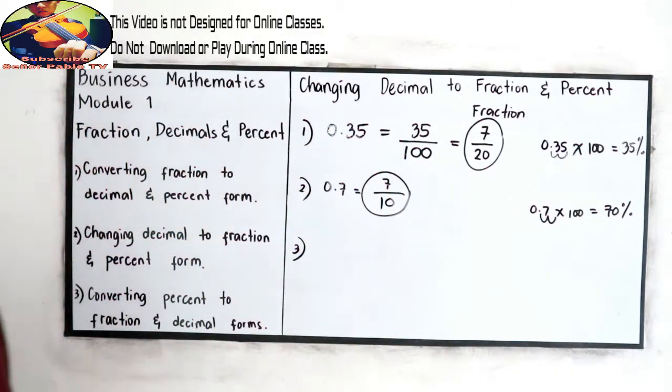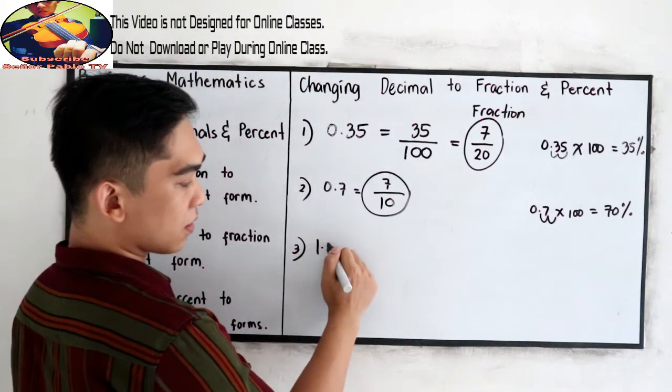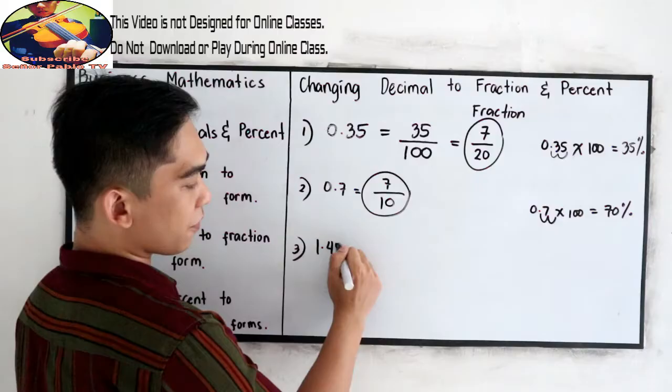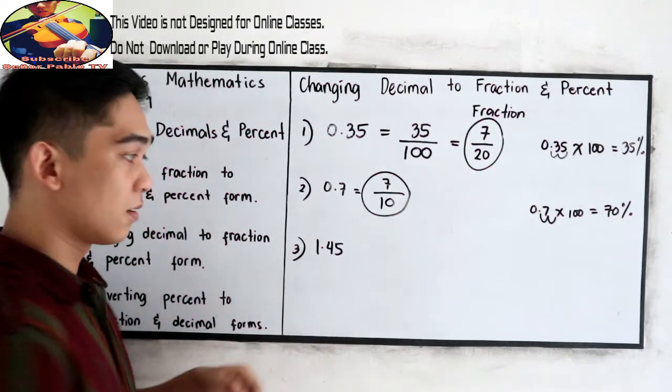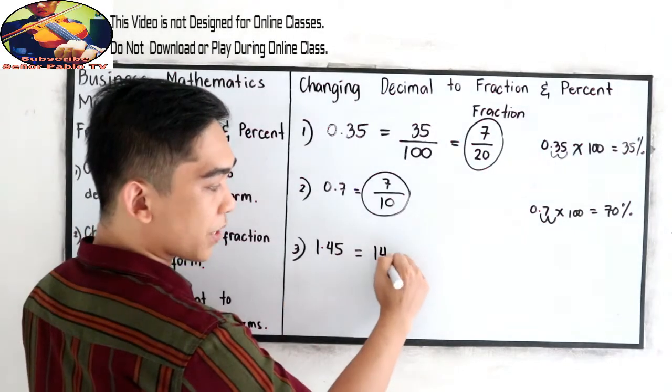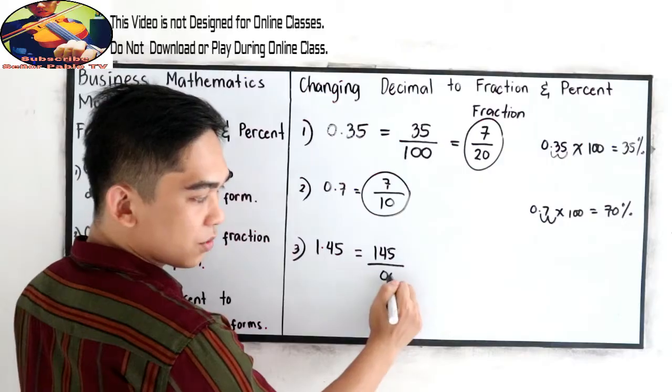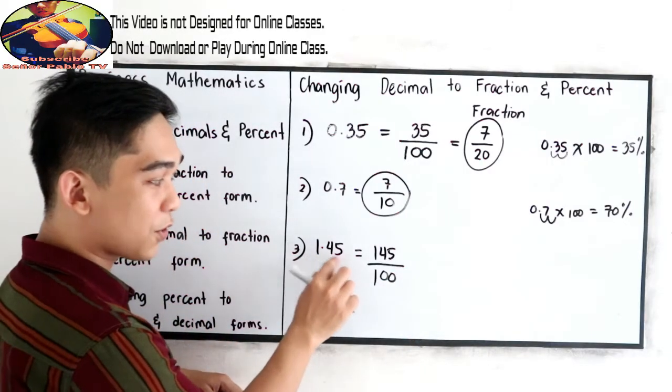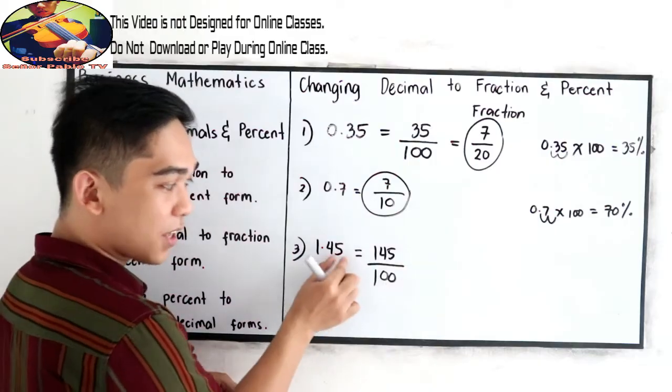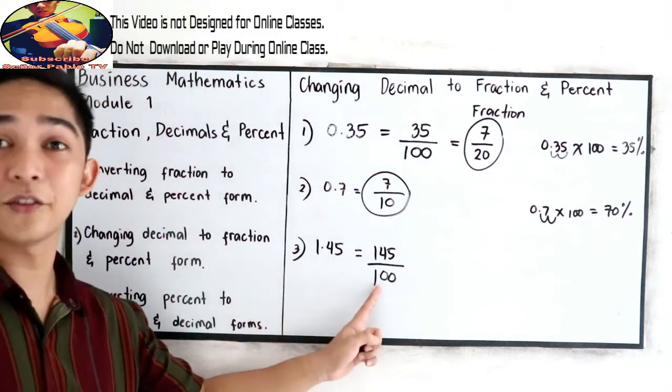Number three, let's say we have 1.45. So just copy, 1.45 over two decimal places, so two zeros, then write 1. Again, copy, 1.45 over two decimal places, so write two zeros, that will become 100.